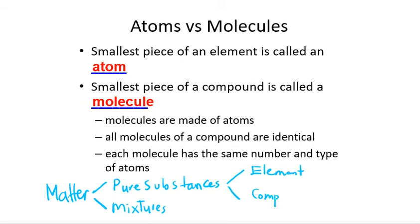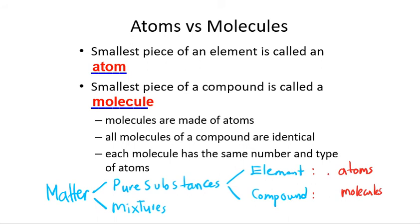Atoms are the smallest piece of an element — the building block of elements. The smallest piece of a compound we call molecules, so the building block of compounds is molecules. So molecules make compounds, and atoms make elements.